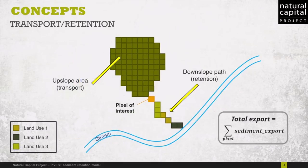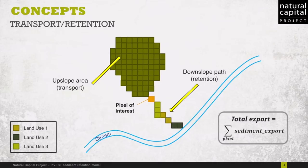In a second step, the model will compute the transport capacity on each cell. To do this, we first consider the upslope component, which looks at the flow or amount of energy available to transport the sediment downstream. Then there's the downslope flow path, which represents the potential for the sediment to be retained before it reaches the stream. This depends on the distance, slope, and retention capacity of the land-use land cover on the way to the stream.